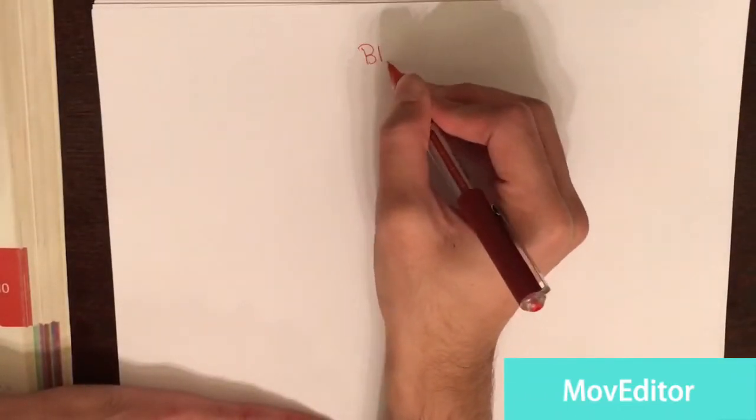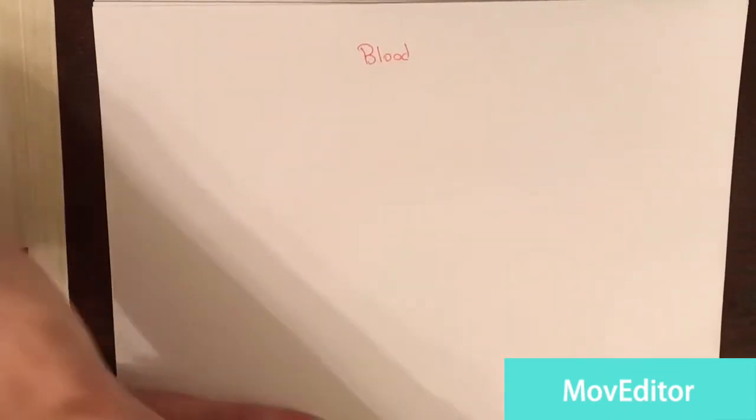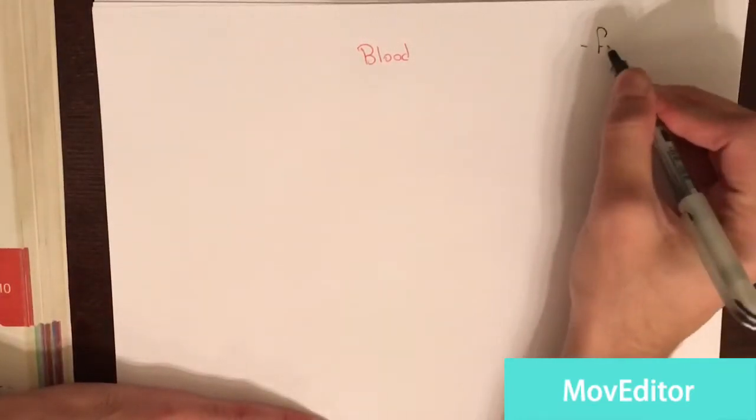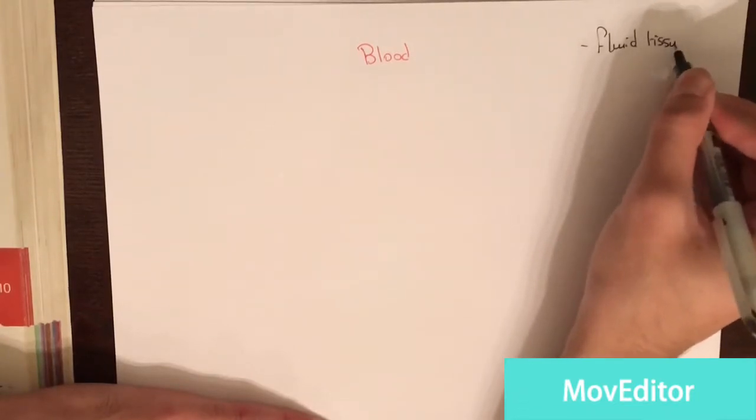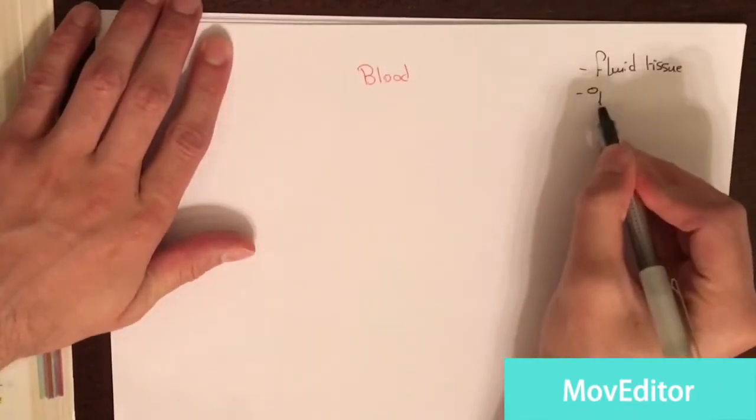Blood is one of the easiest chapters and it is not very long. Just an introduction, simple introduction. Blood is fluid tissue and blood is opaque.